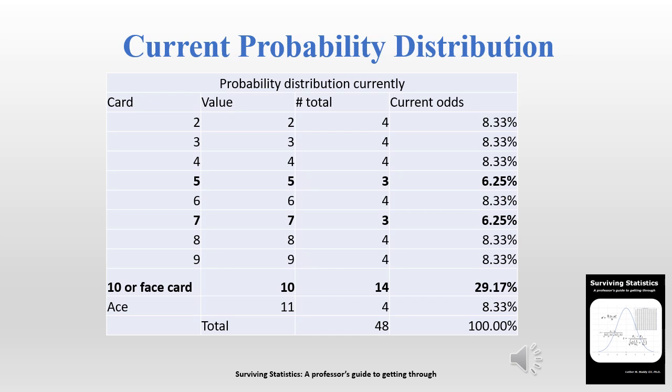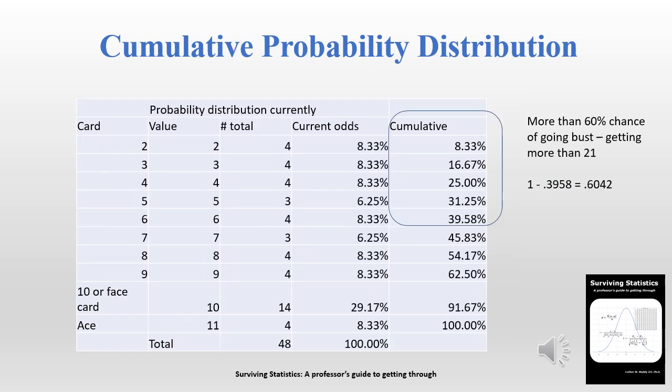This is somewhat useful, but it would be more useful to use a cumulative probability distribution. With a score of 15, before drawing that last card which was a 10, I'm looking for anything from a six or lower. Adding a cumulative column — remember, cumulative probability just adds the probability above it — we can see there is about a 40% chance of getting a six, five, four, three, or two. This means there's a 60% chance of getting something higher than a six and going bust.